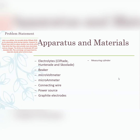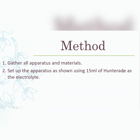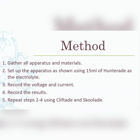Method: Gather all apparatus and materials, set up the apparatus as shown, using 15 mils of Hunter Aid as the electrolyte. Record the voltage and the current, and record the results. Then repeat all of those steps using Clift Aid and School Aid.